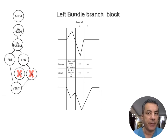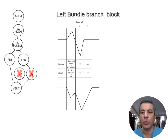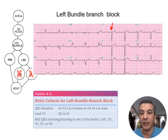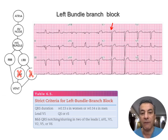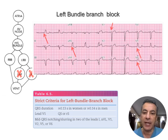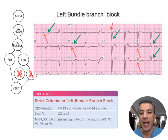In left bundle branch block, conduction in the right bundle and right ventricle initiates normally. However, due to the relatively small contribution of the right ventricle to the QRS complex, what we see is an abnormal right-to-left activation of the septum, resulting in a QS pattern in V1 or a significant reduction in the R wave, compensated by a wide, delayed S wave in the left leads such as lead I, aVL, V5, and V6. The activation of the rest of the left ventricle proceeds from right to left but in slow, slurred waves — a wide deep S wave in the right leads and a tall wide R wave in the left leads. QRS duration is typically wider than 120 milliseconds.